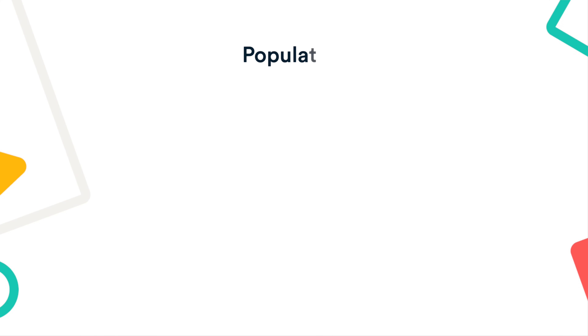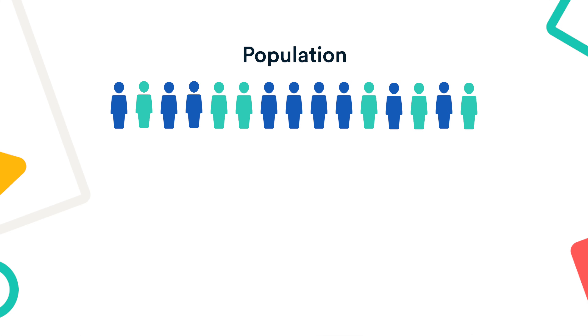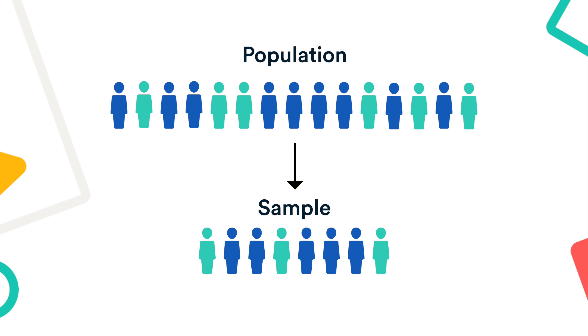Your research design should clearly define who your research will focus on and how you go about choosing your participants. In research, a population is the entire group that you want to draw conclusions about, while a sample is the smaller group of individuals you actually collect data from. In this video, I'll explain how to define your population and introduce you to some strategies for selecting a sample.